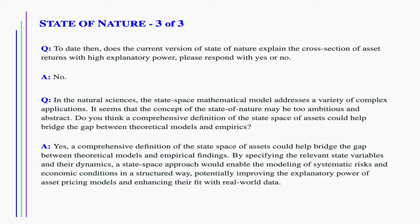Does the current version of state of nature explain the cross-section of asset returns with high explanatory power? No. In the natural sciences, the state-space mathematical model addresses a variety of complex applications. It seems that the concept of the state of nature may be too ambitious and abstract. Do you think a comprehensive definition of the state-space of assets could help bridge the gap between theoretical models and empirics? Yes. A comprehensive definition of the state-space of assets could help bridge the gap by specifying the relevant state variables and their dynamics, enabling the modeling of systematic risks and economic conditions in a structured way, potentially improving the explanatory power of asset pricing models.